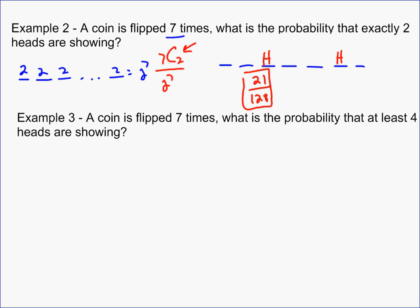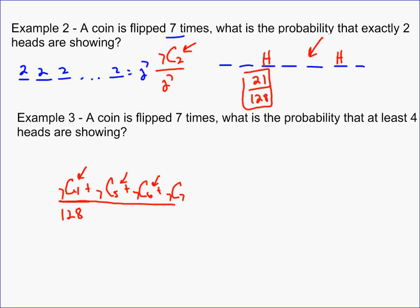The next part asks for the probability that at least four heads are showing — meaning four heads, five heads, six heads, or seven heads. The denominator is still 128 since you're still flipping seven coins. Using the same approach, the number of positive outcomes is 7 choose 4, plus 7 choose 5, plus 7 choose 6, plus 7 choose 7 — choosing that many coins to be heads.